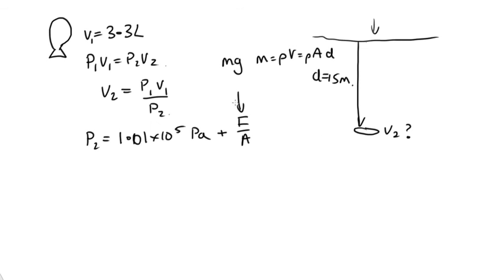And so we have that this is equal to 1.01 times 10 to the 5, plus the rho, which is 1,000, because it's freshwater, times, well, the A up there will cancel with the A down here. So times d, which is the 15, times the g, which is the 9.8. And so working out this pressure,